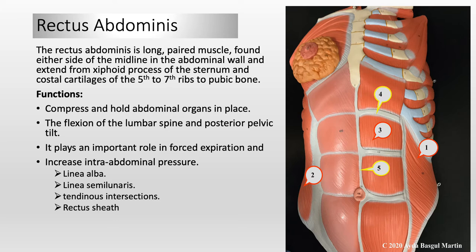The functions of the rectus abdominis: it is an important postural and core muscle that compresses and holds the abdominal organs in place. With a fixed pelvis, contraction results in flexion of the lumbar spine. When the ribcage is fixed, contraction results in a posterior pelvic tilt. It also plays an important role in forced expiration and increasing intra-abdominal pressure.